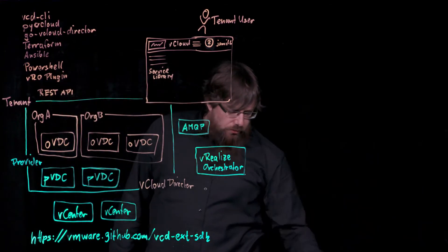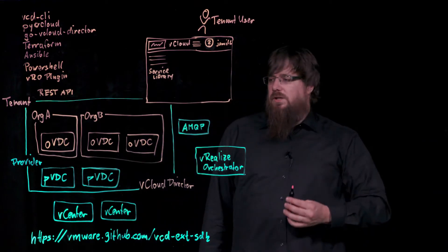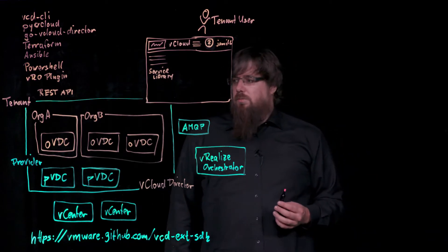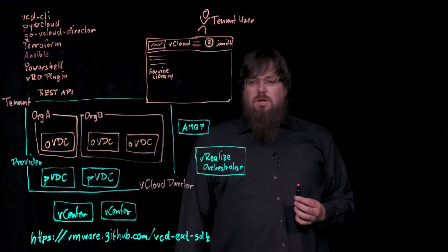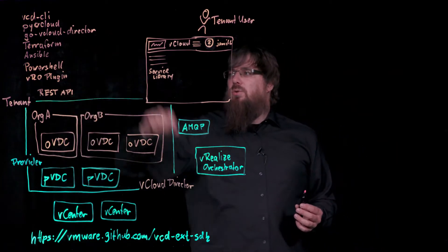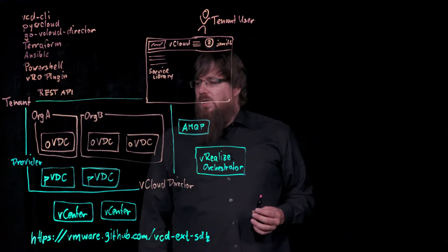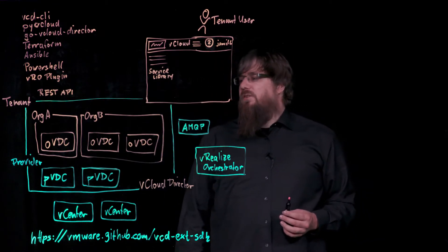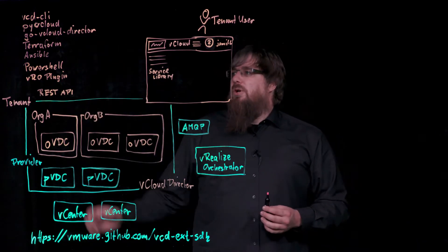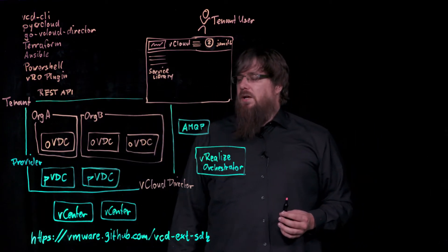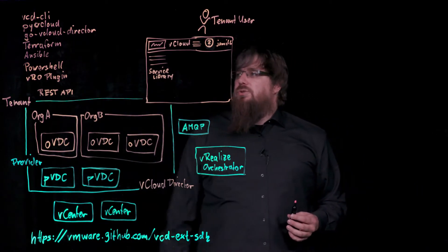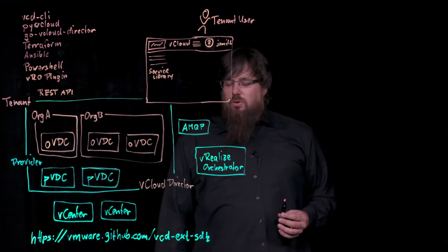These different options allow you to automate vCloud Director tasks through the REST API. For example, as a service provider, if you want to become more efficient in your operations and automate tenant onboarding — such as the creation of organizations and organization vDCs — that is something you can do using these different tools. There are also use cases for tenants, such as software developer tenants who want to automate the deployment of vApps and virtual machines using the Terraform or Ansible modules, or the command line.